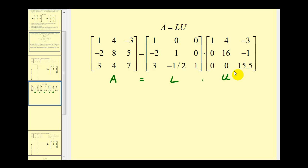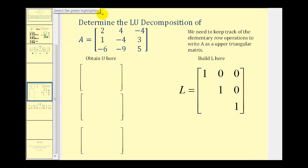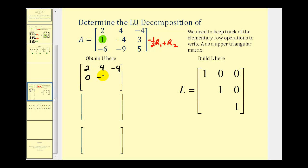Let's take a look at a second example. Let's start by obtaining a zero in the first below-diagonal position. We need to add a multiple of another row to row two, so we're going to replace row two with negative one half times row one plus row two. The first row stays the same. For the second row: negative one half times two is negative one, plus one is zero; negative one half times four is negative two, plus negative four is negative six; negative one half times negative four is positive two, plus three is five. The third row stays the same. Our multiplier is negative one half, so we put positive one half in row two, column one of our lower triangular matrix.